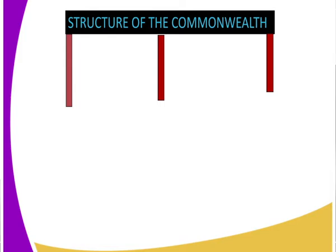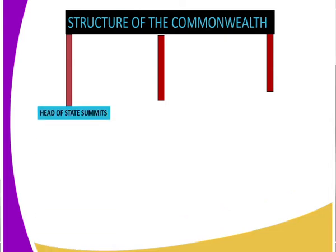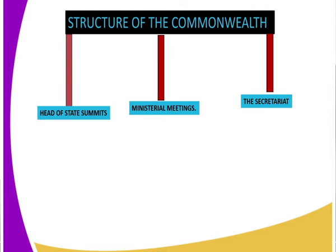Let us look at the structure of the Commonwealth. We have a table here. The first structure is the Heads of State Summits. The second structure is the Ministerial Meetings. And finally, we have the Secretariat. That is the overall structure of the Commonwealth: the Heads of State Summits, the Ministerial Meetings, and the Secretariat.